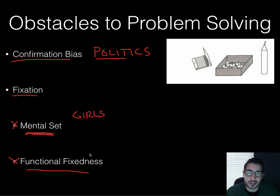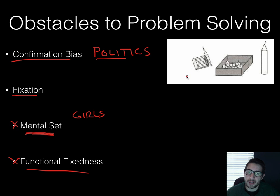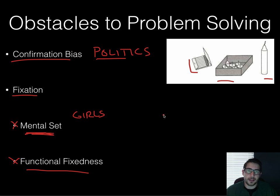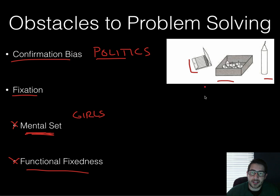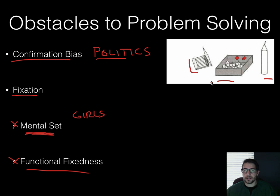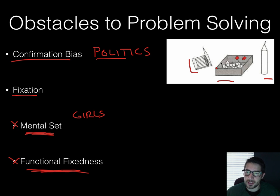Likewise, there's an idea called functional fixedness. This is where we tend to only look at something for what we commonly see it used for. A very common example is the candle-matchbox problem: given a candle, some tacks, and a matchbox, how can you make the candle stick on the wall and light it? Everyone scratches their head. The correct answer is you take the tacks out of the box, tack the box to the wall, set the candle inside the box, and light it. We have to think outside the box — no pun intended. Before reaching that idea, most people have functional fixedness because they never thought of the matchbox as a holder for the candle.